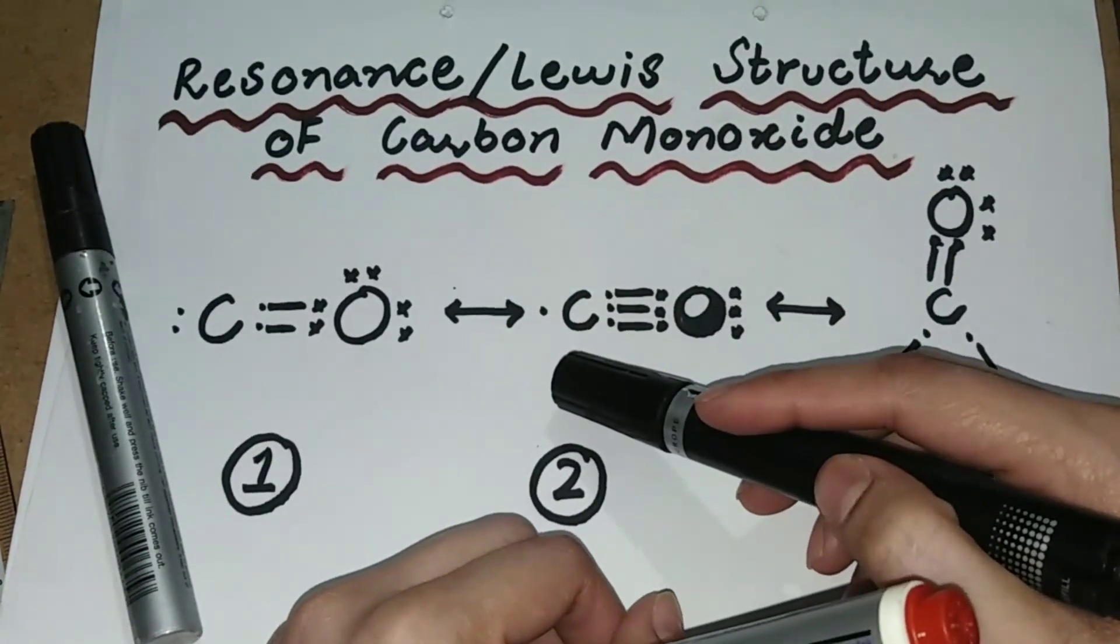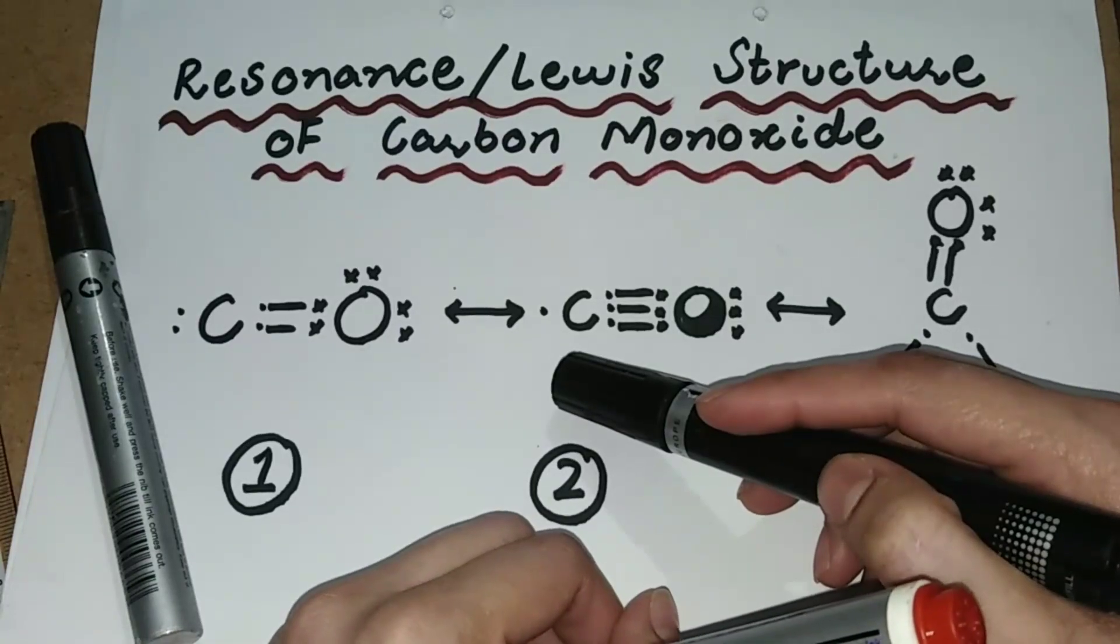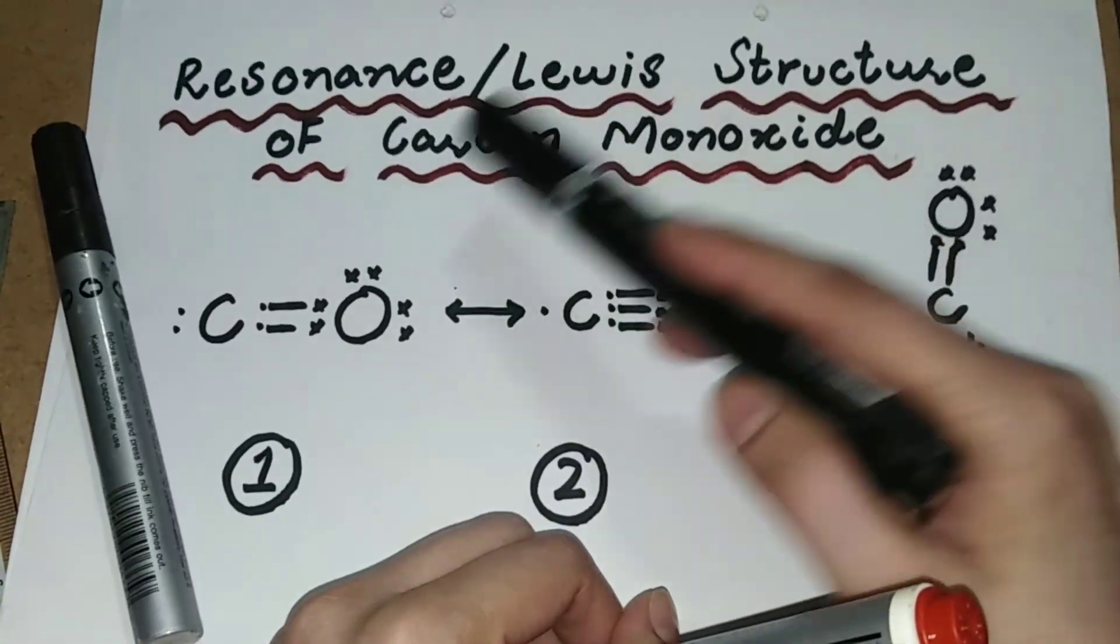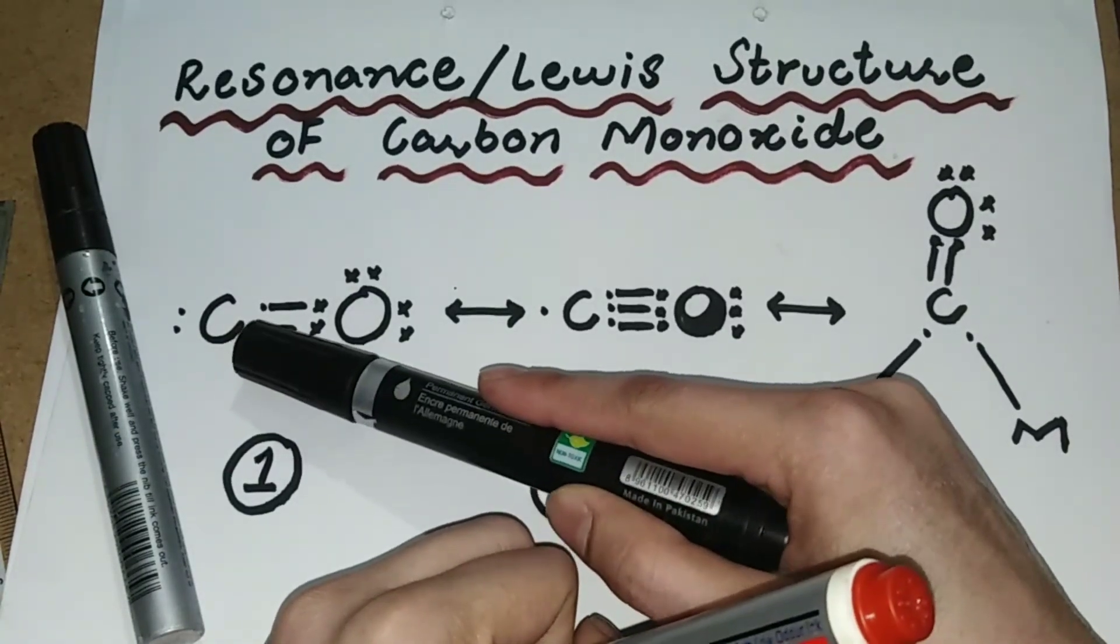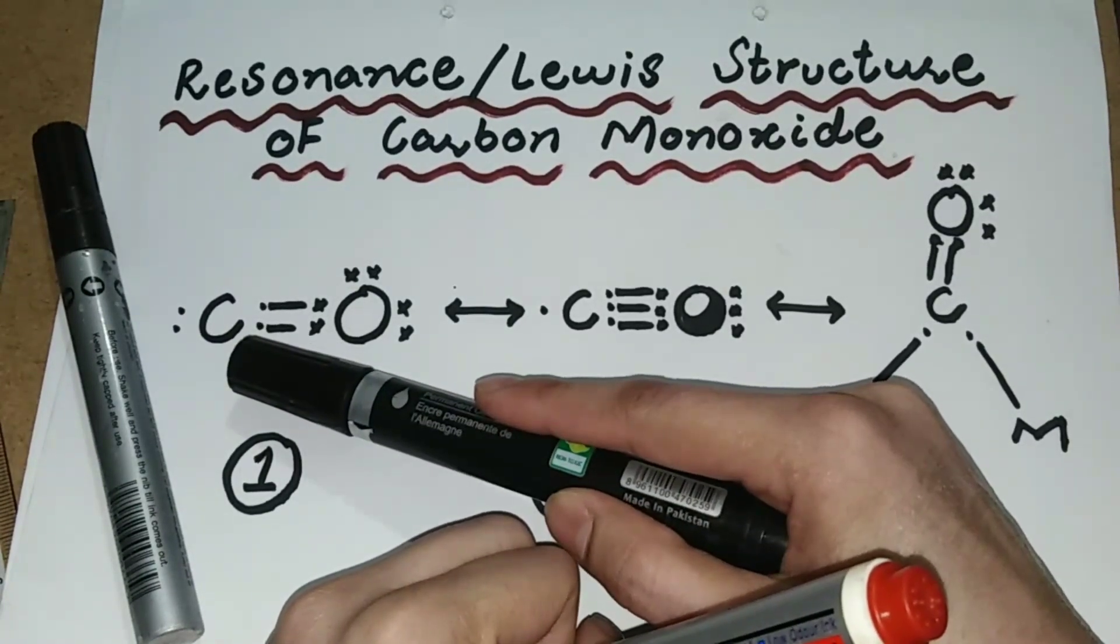Assalamu alaikum, welcome to my channel The Chemist. In this video I will tell you about the resonance or the Lewis structures of carbon monoxide. Carbon belongs to the fourth group of the periodic table and has four electrons in the outermost shell.